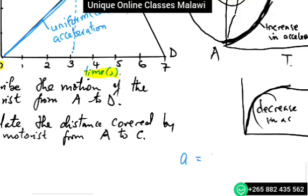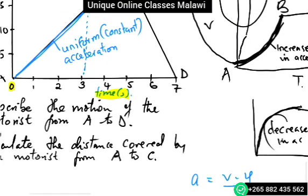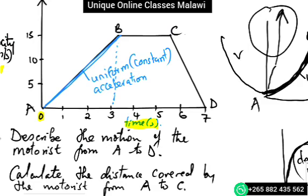A equals V minus U over T. In this case, V is 15 meters per second, U is zero, so it's 15 over 3, which equals 5 meters per second squared. That's uniform acceleration, meaning every second the speed increases by the same amount.